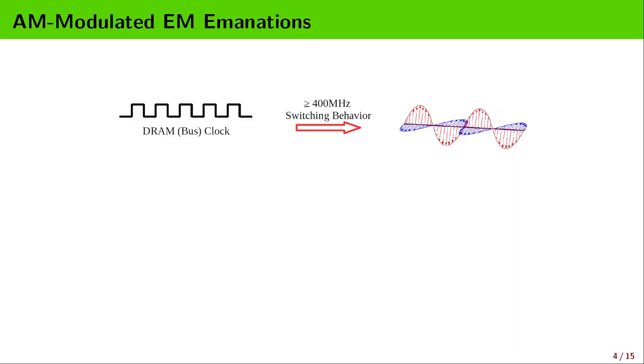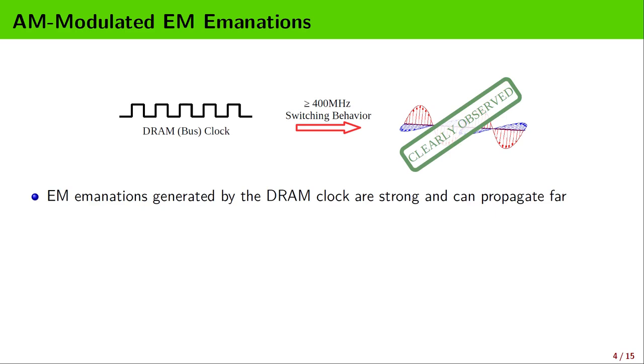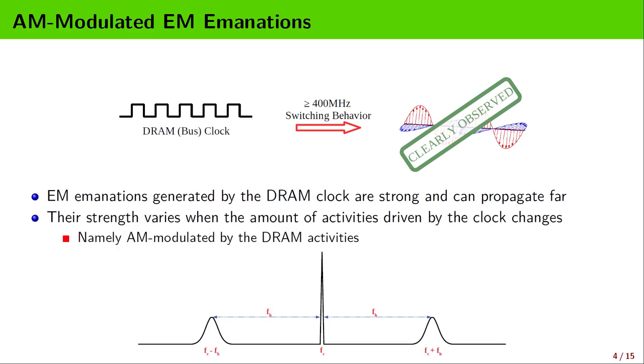As we know, the DRAM bus is driven by a high frequency clock. This clock intrinsically creates a periodic EM signal. This signal is strong and can propagate very far, which reduces the measurement requirements a lot. Some researchers have found that the strength of the clock's EM signal varies when the amount of activities driven by the clock changes. In other words, the signal is AM modulated by the activities.